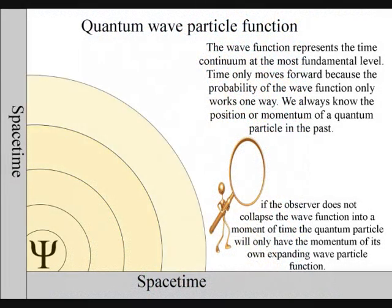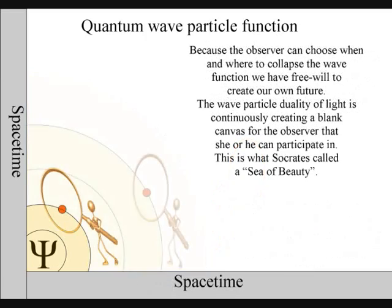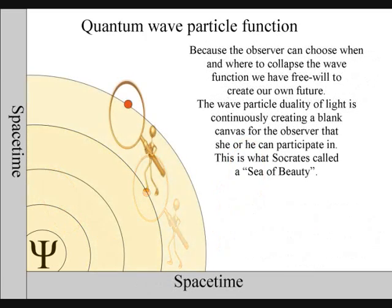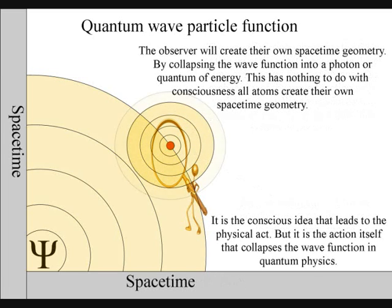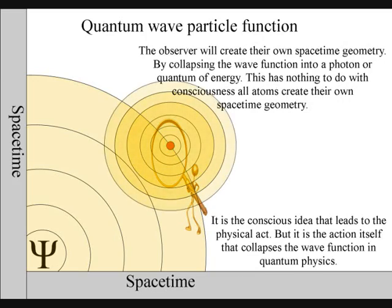It is because the observer can choose when and where to collapse the wave-function that we have free will. Life will create its own ripples in the fabric of space-time, forming its own broken symmetry of its own evolutionary path or timeline.